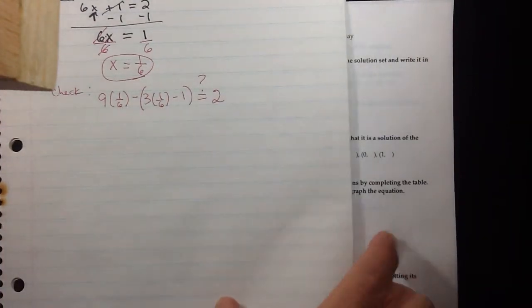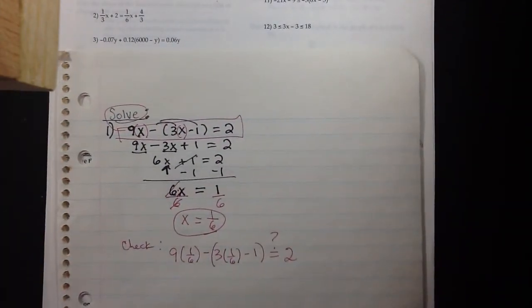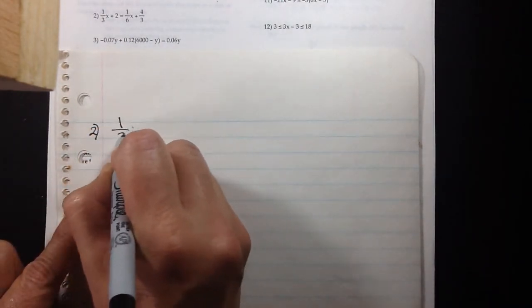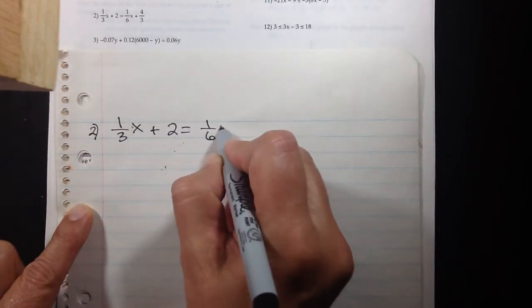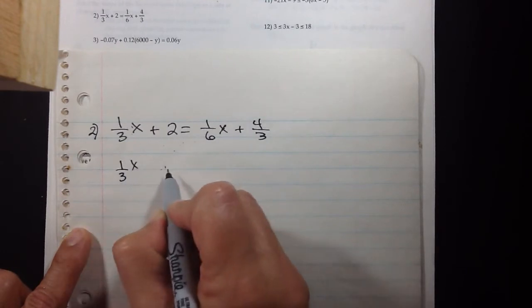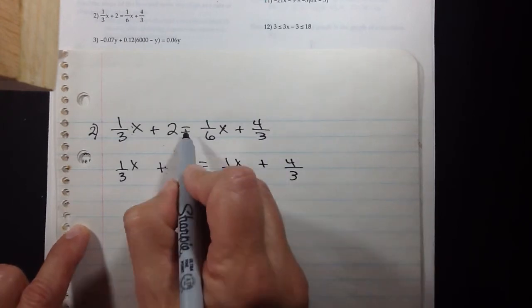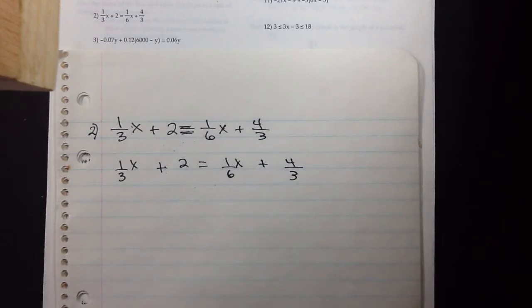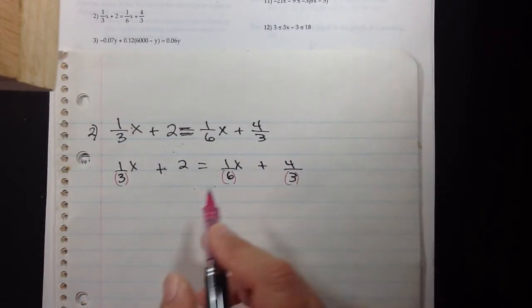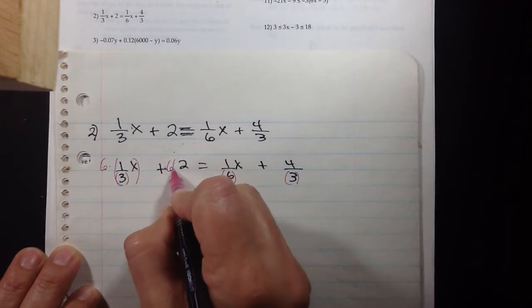The next question is another solve: 1/3 x plus 2 equals 1/6 x plus 4/3. When we're solving and we have an equation with fractions, we should just go for clearing the fractions. This only works when we have an equation with fractions—we get this luxury to clear the fractions. The way we clear the fractions is we look at the denominators we have and say, okay, the common denominator would be a 6.